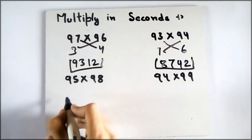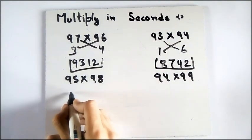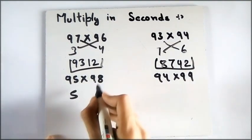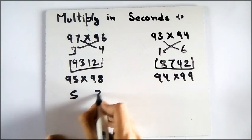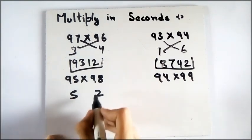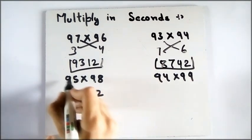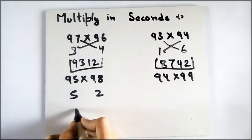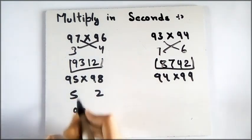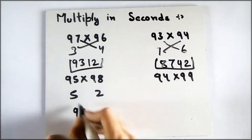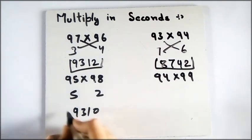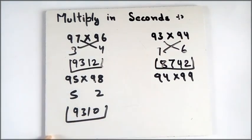Let's take a look at this one. It is 5 less than 100 and it is 2 less than 100. I will subtract this one from this — it is 93 and 5 times 2 is 10, and this is our answer.